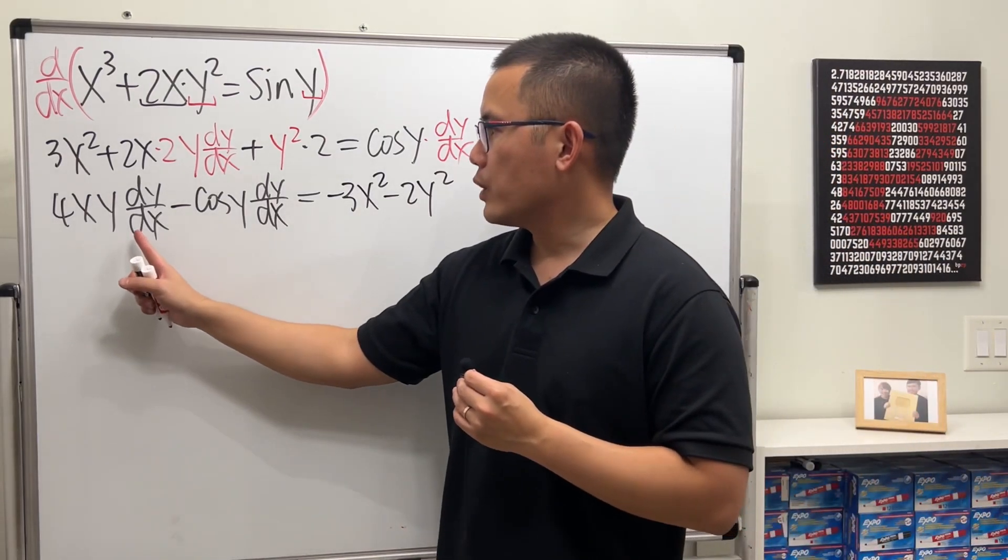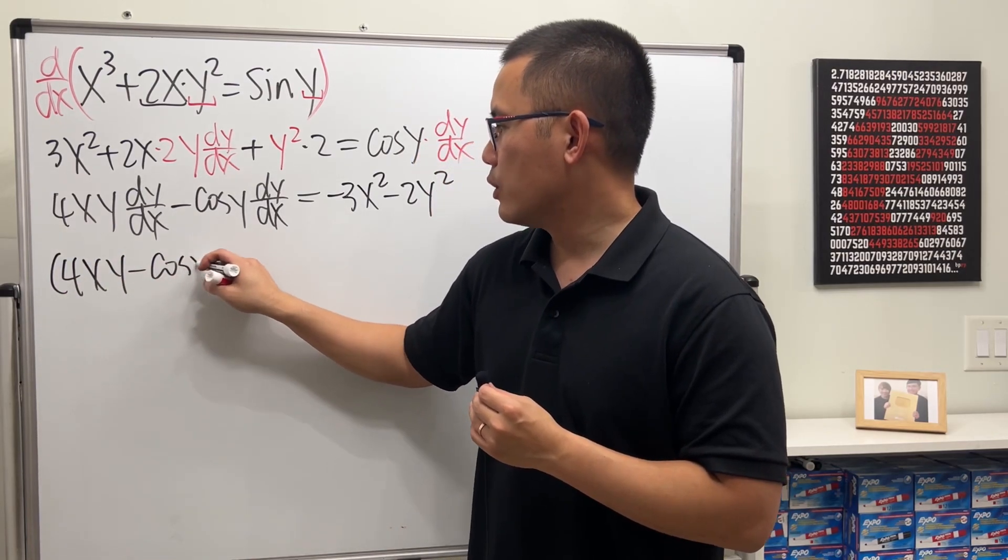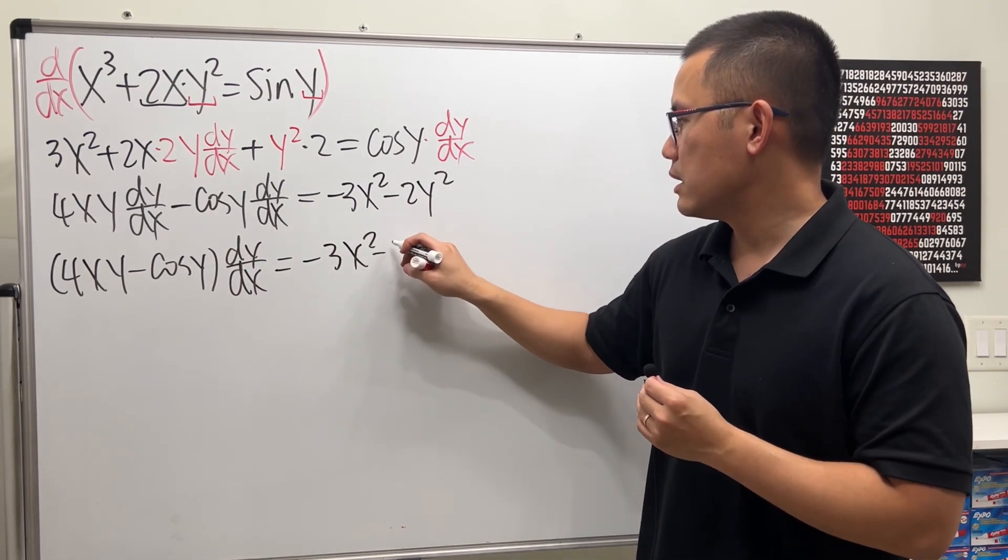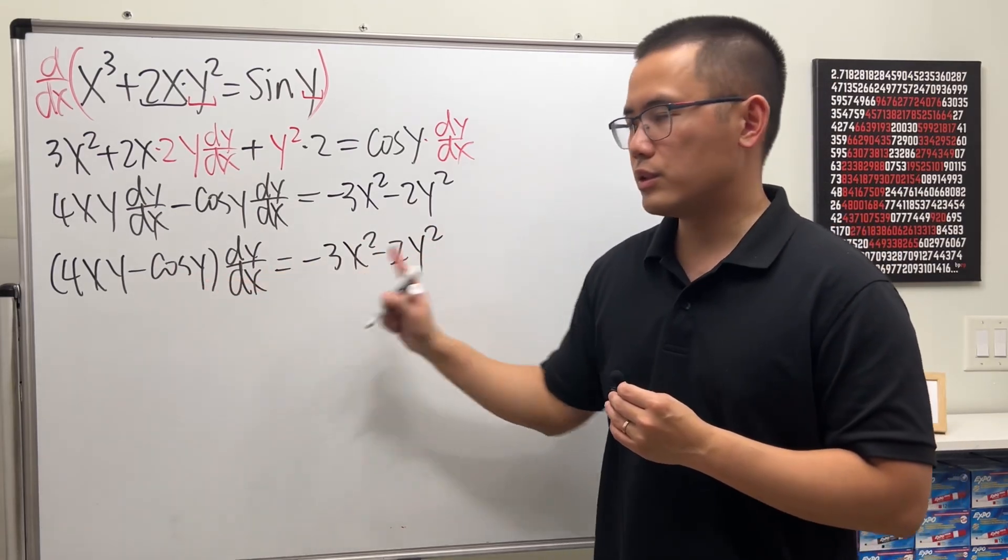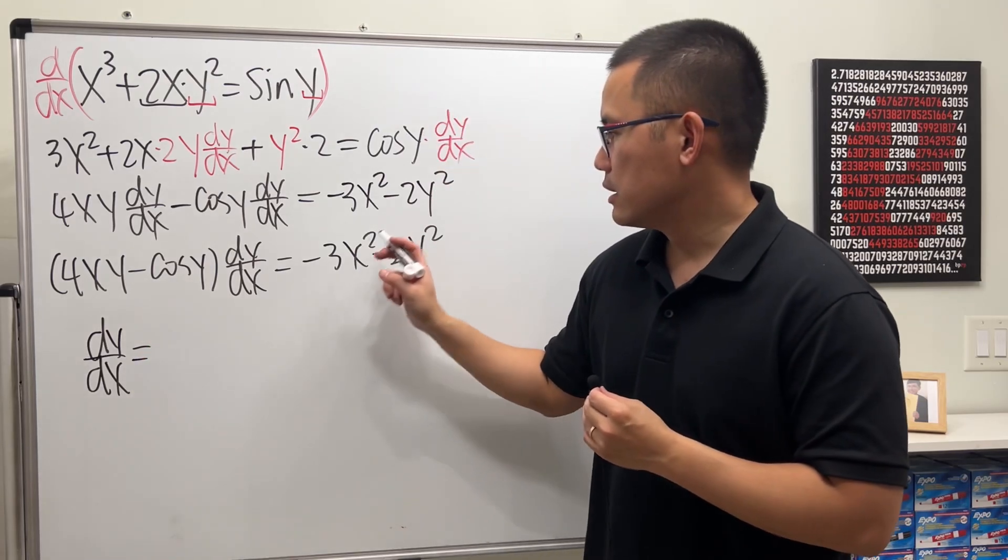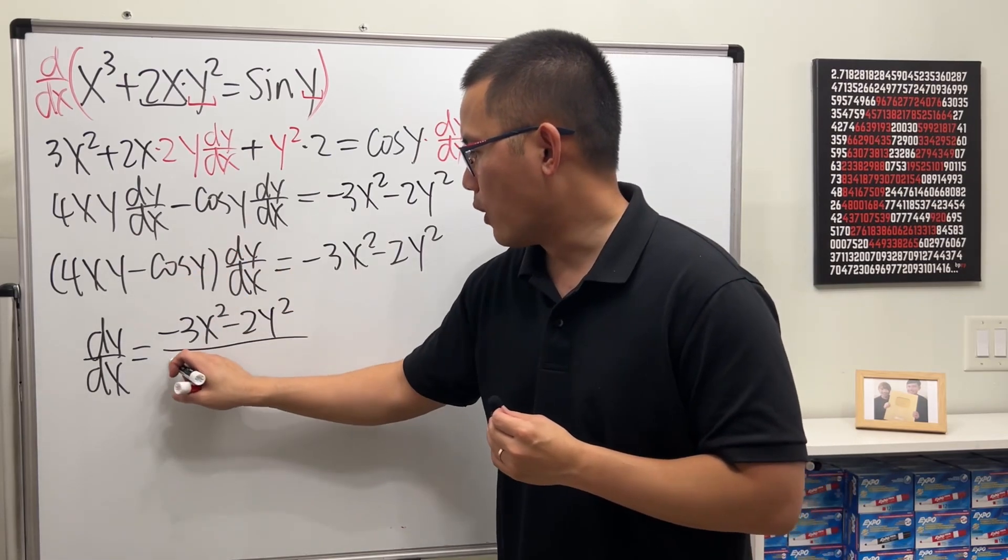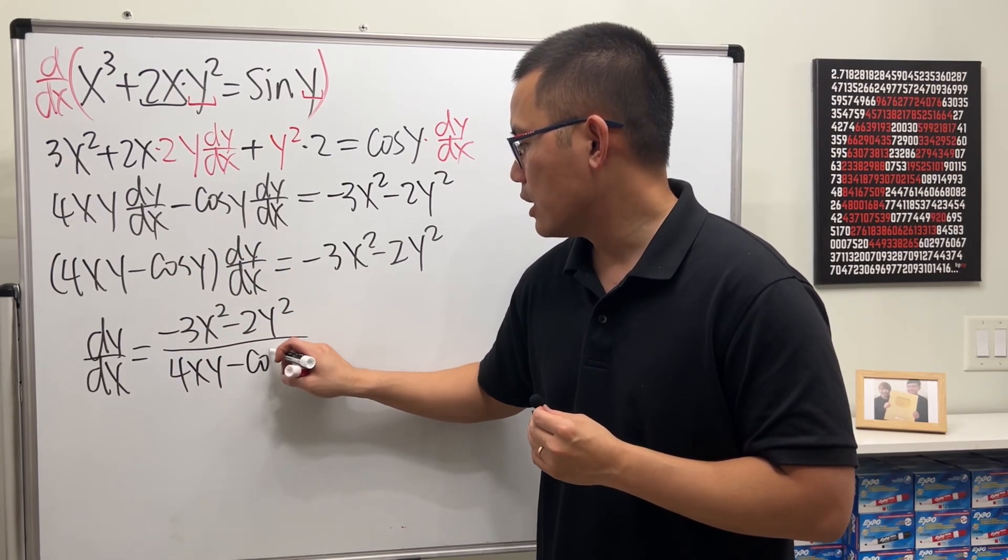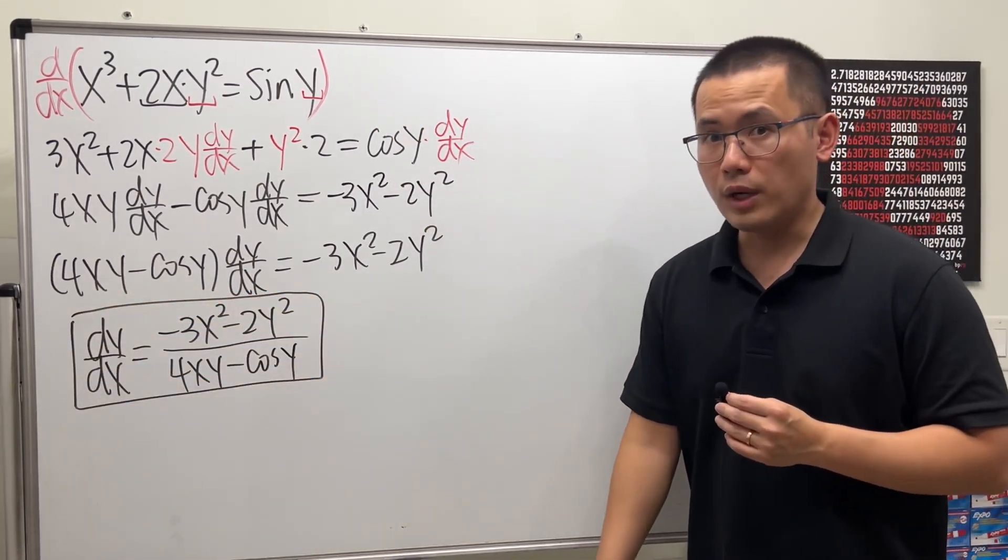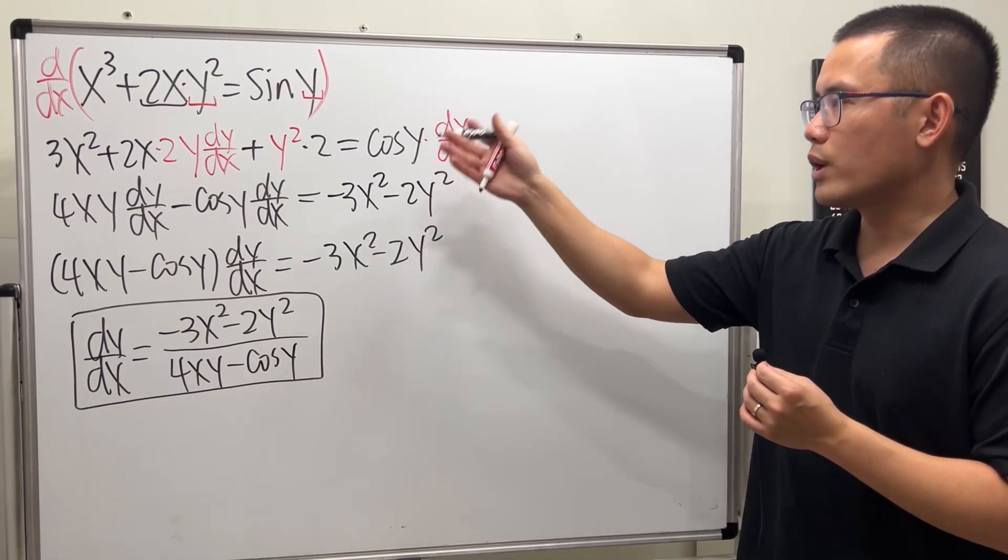And then right here, we can factor out the dy/dx. So we have 4xy minus cosine y, and then dy/dx. That's equal to this. And then finally, we can just divide this to the other side. So dy/dx equals negative 3x squared minus 2y squared over 4xy minus cosine y. And that is the Calc 1 way of doing dy/dx when we have a derivative where the y is not isolated.